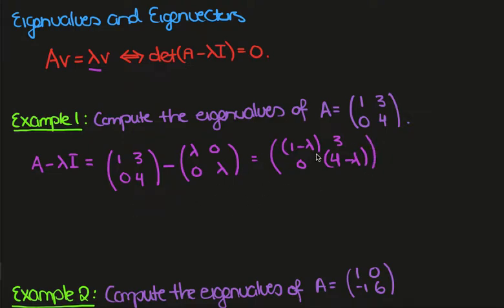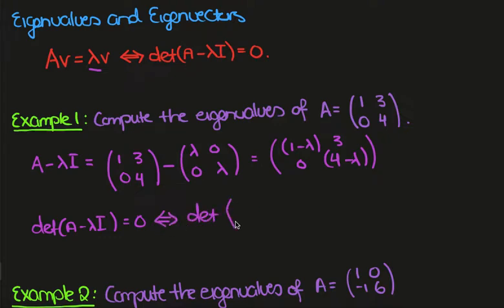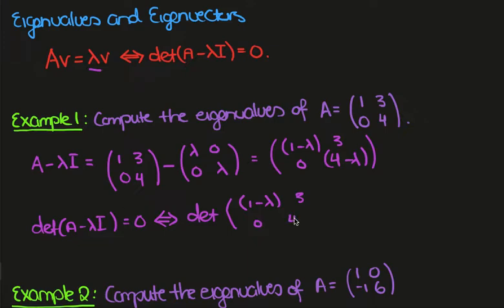We compute the determinant of this matrix, so the determinant of A minus lambda I equals 0 if and only if the determinant of [1 minus lambda, 3; 0, 4 minus lambda] equals 0.